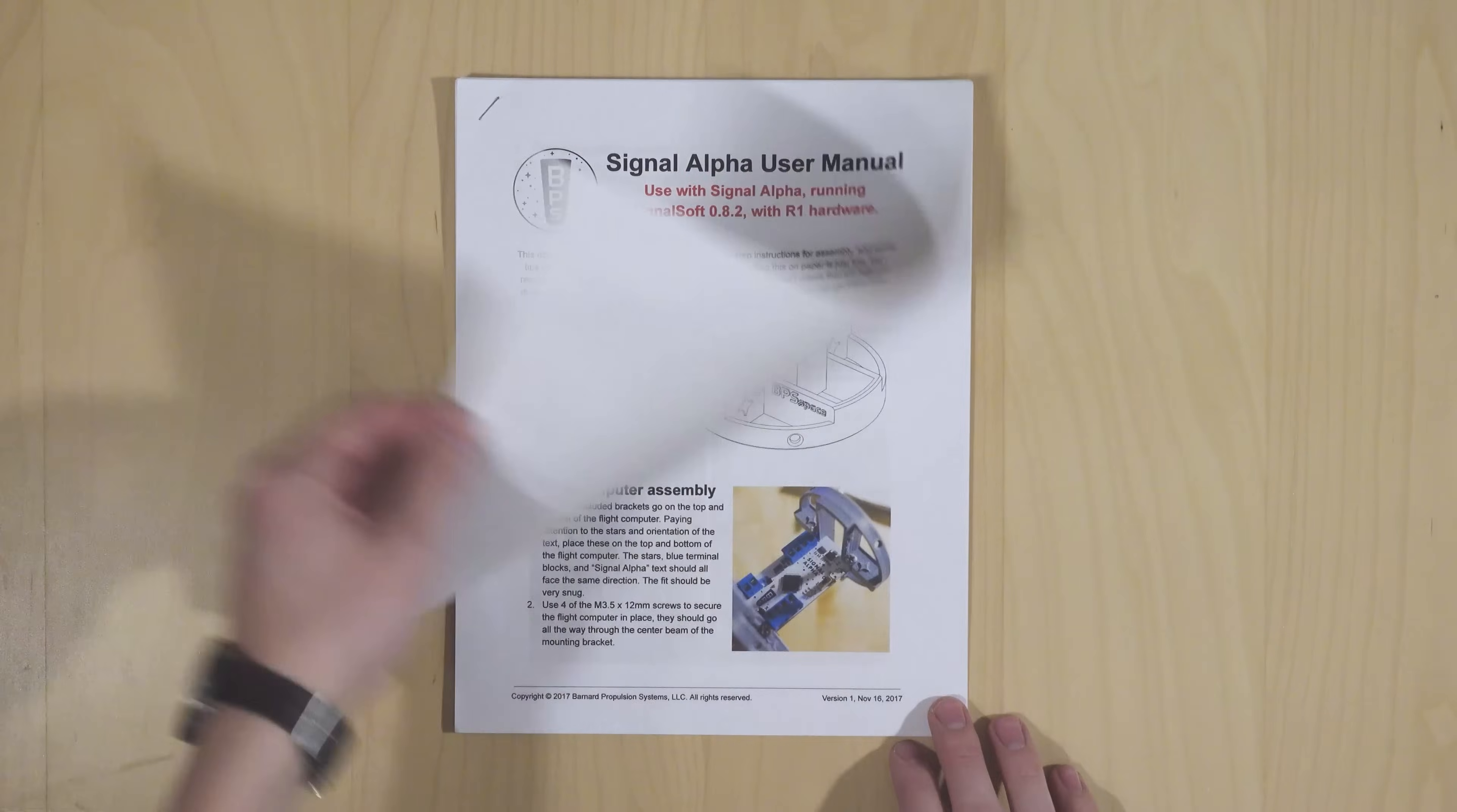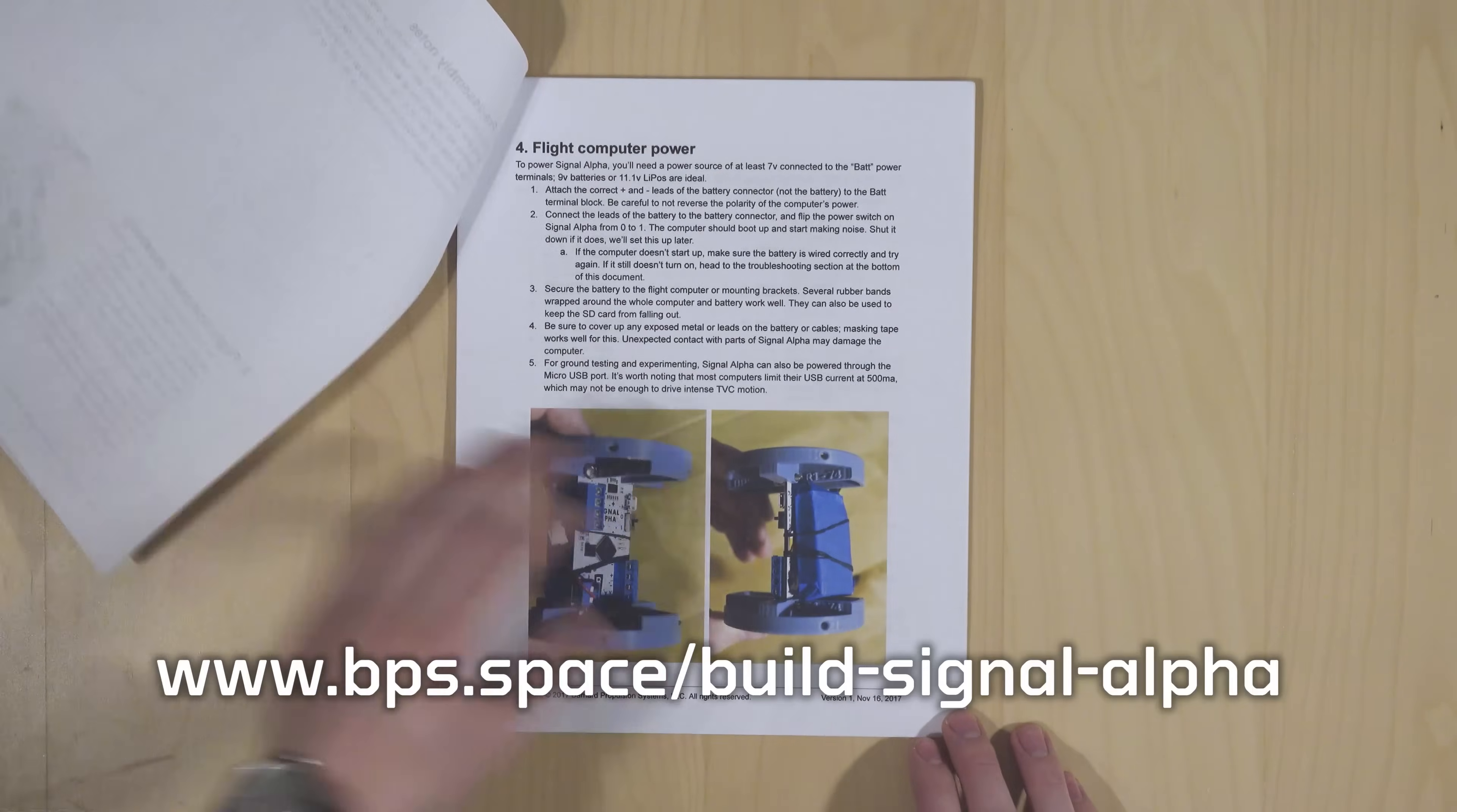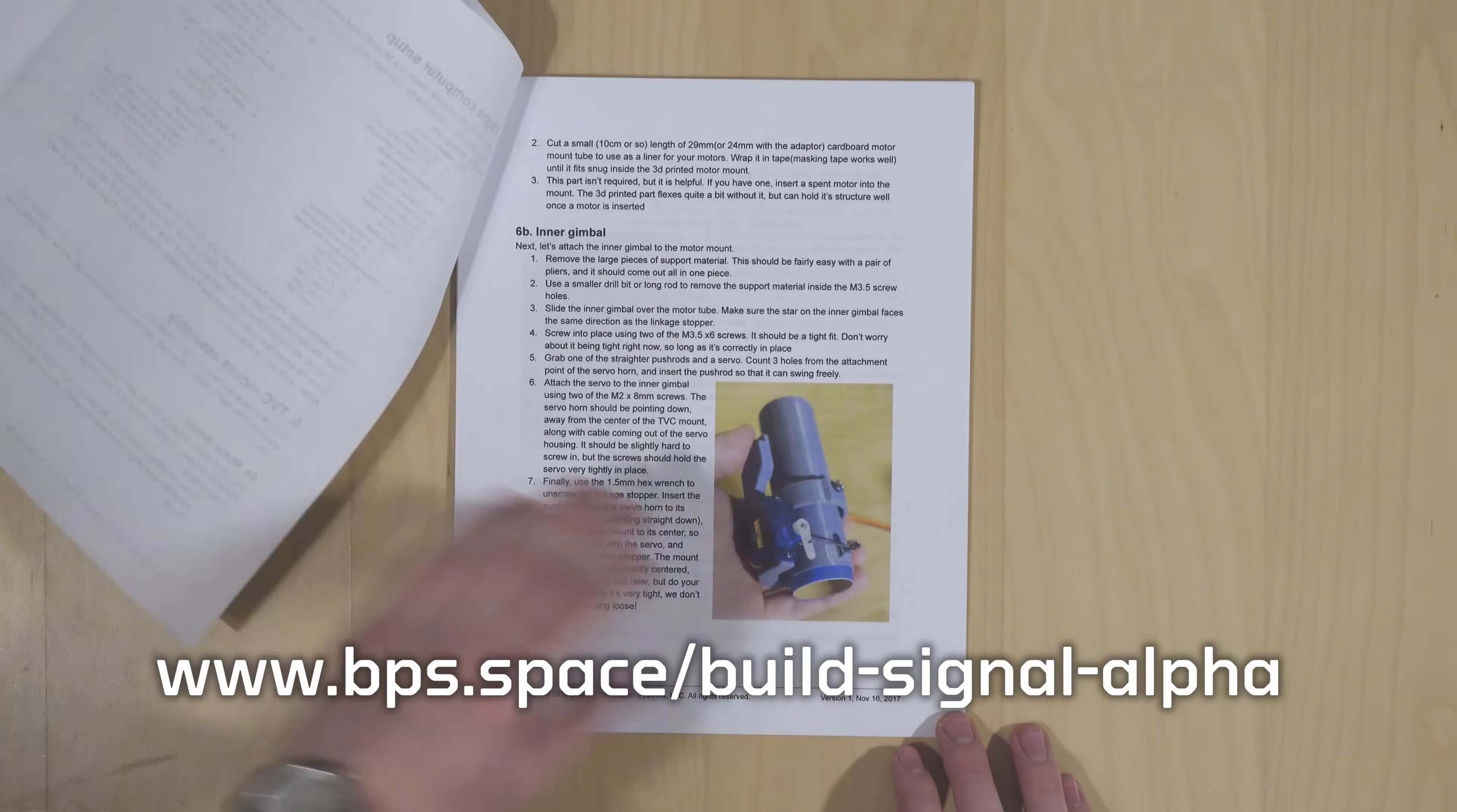Before we jump into things, you'll want to follow along using the Signal Alpha user manual. You can download this at bps.space/build-signal-alpha.